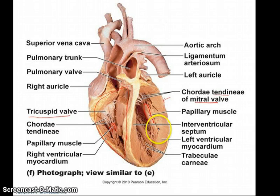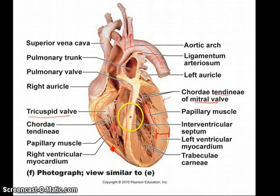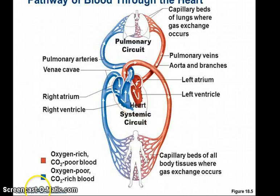One important thing to note is the difference in myocardium thickness between the left and right ventricles. The left ventricle has a much thicker myocardium because it has to pump blood up through the aorta and out to all the tissues of the body, meeting more and more resistance or friction, so it needs more muscle to produce more force. The right ventricle only pumps blood to the lungs, which is a short distance, so it doesn't need as much muscle.